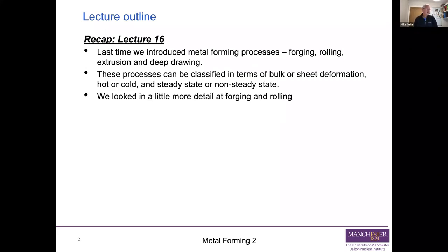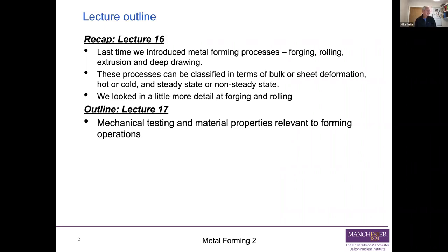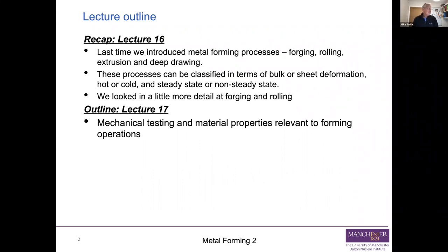We then looked in a little more detail at forging and rolling, and we won't be looking at them further now. So today in lecture 17, we're going to start by looking at mechanical testing and material properties relevant to forming operations — in other words, how do we get the mechanical properties of metals we're going to use, and what mechanical properties are useful for working out whether a material is suitable for a forming operation and for performing calculations on it.